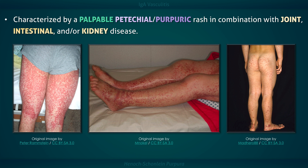The rash typically begins with pink maculopapules or urticaria that blanches with pressure, but later on develops into petechiae and palpable purpura. These lesions can enlarge and coalesce into palpable ecchymosis. In these images, take note of the distribution of the petechiae and purpura on the buttocks, thighs, and legs.